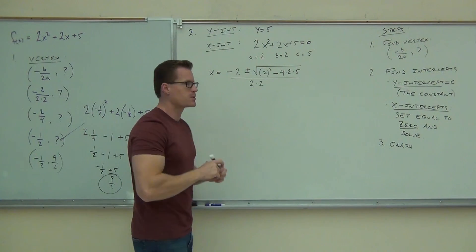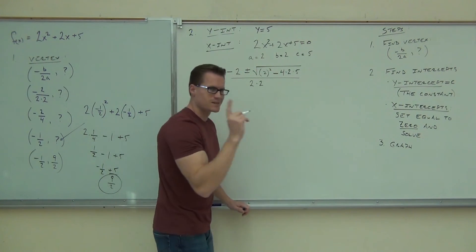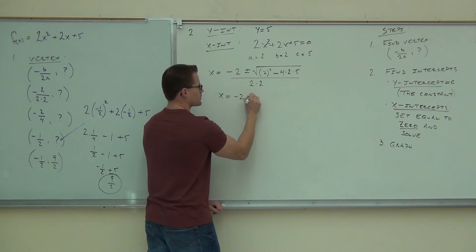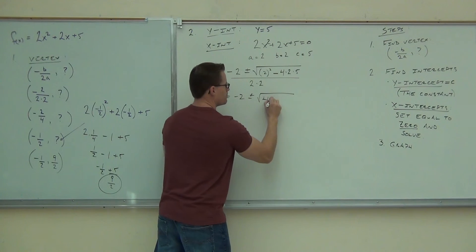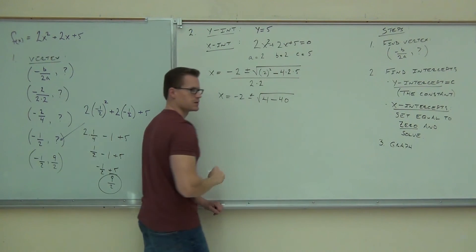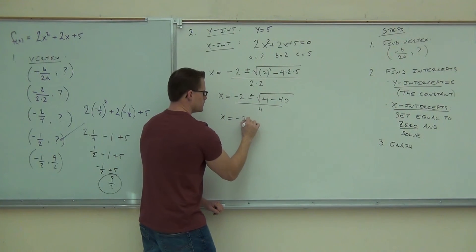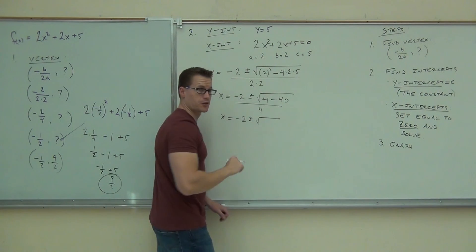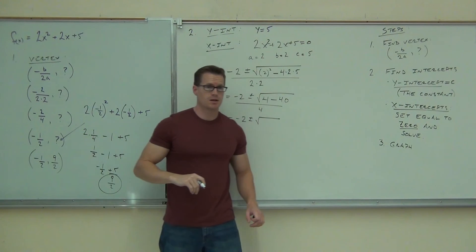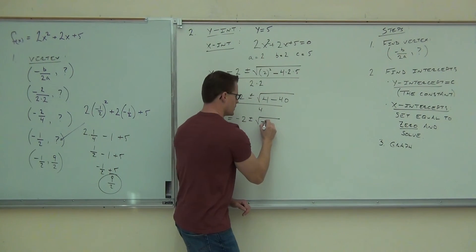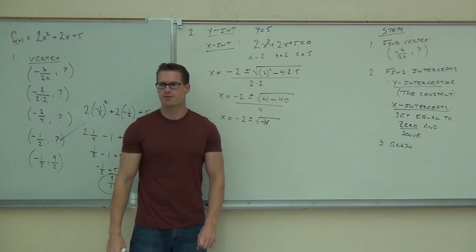Now, check this out. Watch what happens here. You only have to do one step on this. Two steps maybe. X equals negative 2 plus or minus the square root of 4 minus 40. Do you see it? Over 4. What's going to be inside of my radical? Negative 36. Wait. 36 or negative 36? Negative 36. Is it important to get that sign right? Look at this. Oh my gosh. What is the square root of negative 36? 6i.